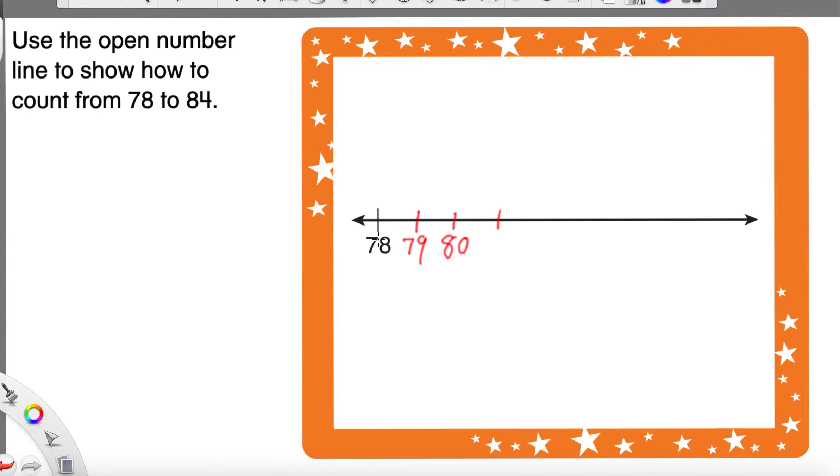If you know how to count on with these bigger numbers, awesome. So 78, 79, 80, 81, 82, 83. We have to make sure we don't write 2 too big. And 84. I'm going to stop there because they said 84 was going to be the biggest number.